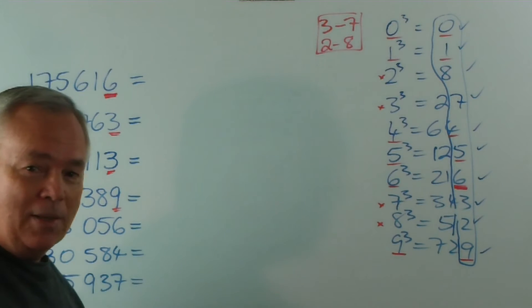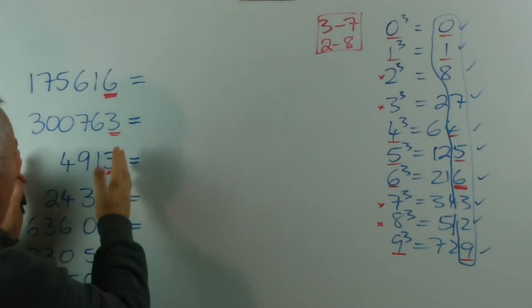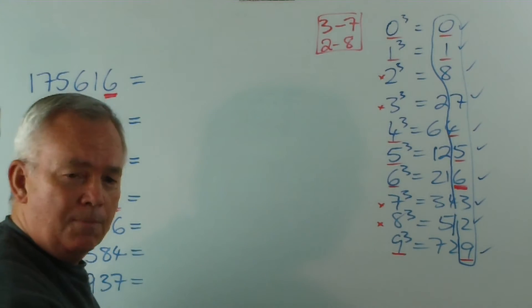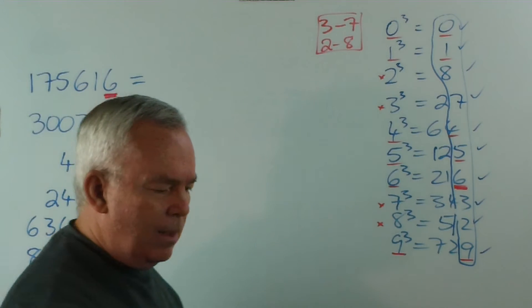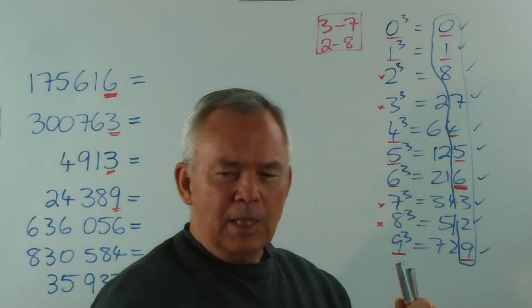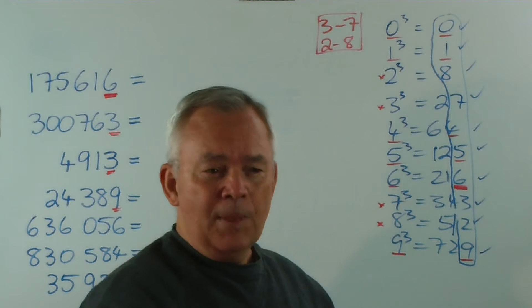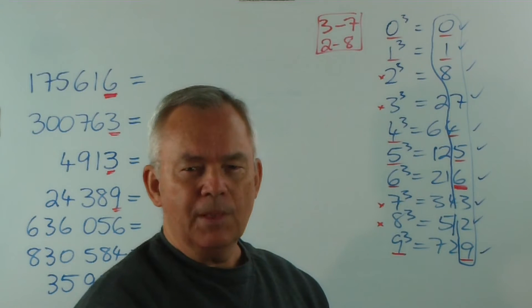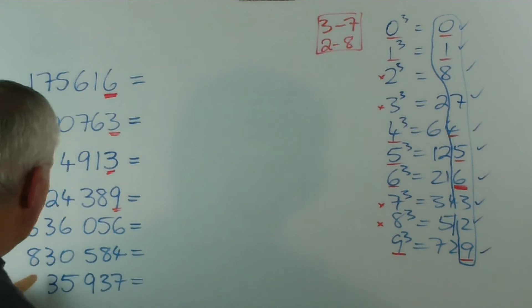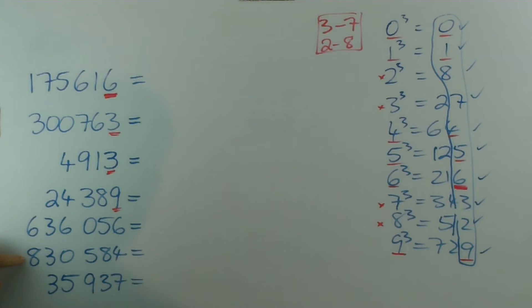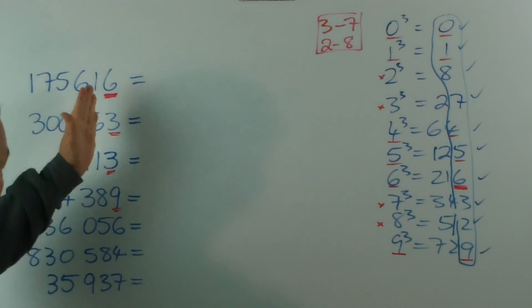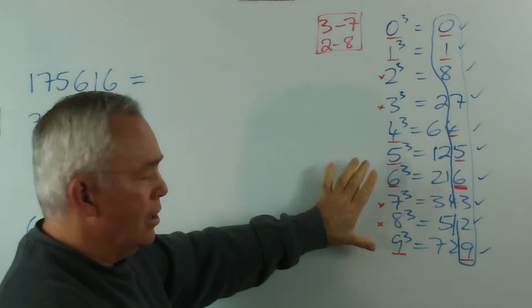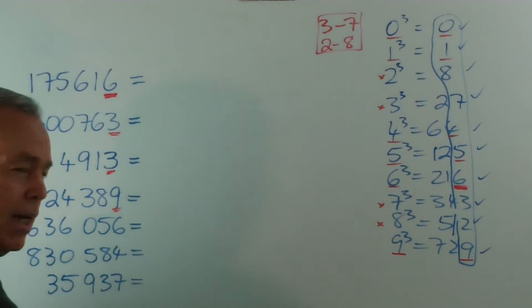Because, when you cube a number, you get something rather large. And, believe it or not, the cube root of all of these will form a two-digit number, or each of these. Even, believe it or not, this one. When you think about it, ninety-nine times ninety-nine times ninety-nine is a little bit less than a hundred times a hundred times a hundred. And a hundred times a hundred times a hundred is a million. It's got one with six zeros. So, anything less than a million, which this is, must give us a cube root of ninety-nine or less. So, there we go. Just by looking at the last digit, we can work out what the last digit of our cube root is. How do we work out the first digit?